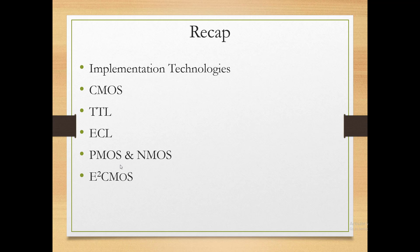CMOS is widely used because its power requirement is very low, but switching speed is slow — though comparable to TTL. CMOS density is high, meaning more circuits can be used in a small space. However, due to high input impedance, static charge can quickly damage it. TTL technology is widely used with fast switching speed but high power requirements.